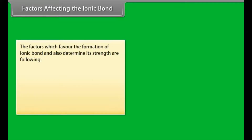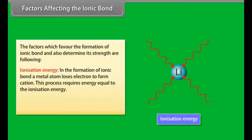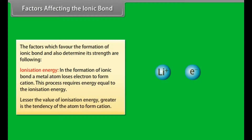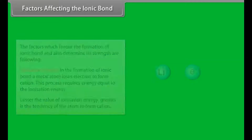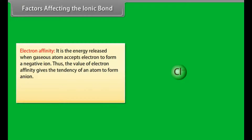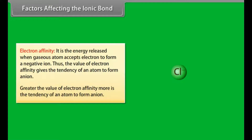Factors affecting the ionic bond. The factors which favor the formation of ionic bond and also determine its strength are: Ionization energy — in the formation of ionic bond, a metal atom loses electrons to form a cation. This process requires energy equal to the ionization energy. Lesser the value of ionization energy, greater is the tendency of the atom to form a cation. Electron affinity — it is the energy released when a gaseous atom accepts an electron to form a negative ion. Greater the value of electron affinity, more is the tendency of an atom to form an ion.